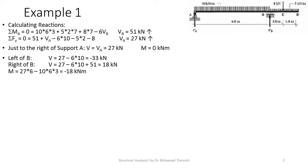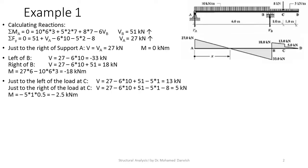Taking a section left of B: V equals 27 minus 6 times 10, which is minus 33 kN. Right of B: V equals 27 minus 6 times 10 plus 51, which is 18 kN. The moment at B is 27 times 6 minus 10 times 6 times 3, equal to minus 18 kN·m.